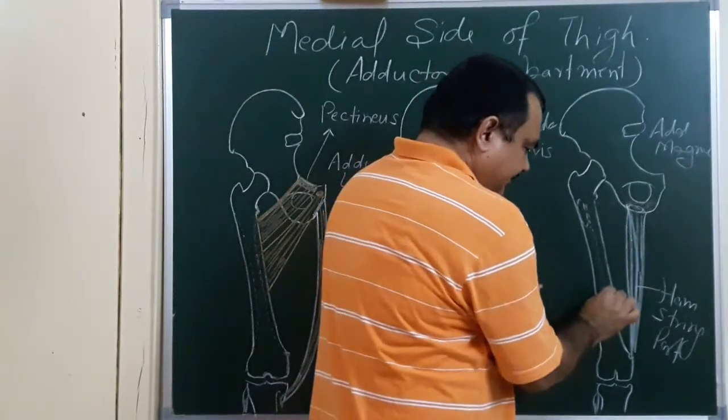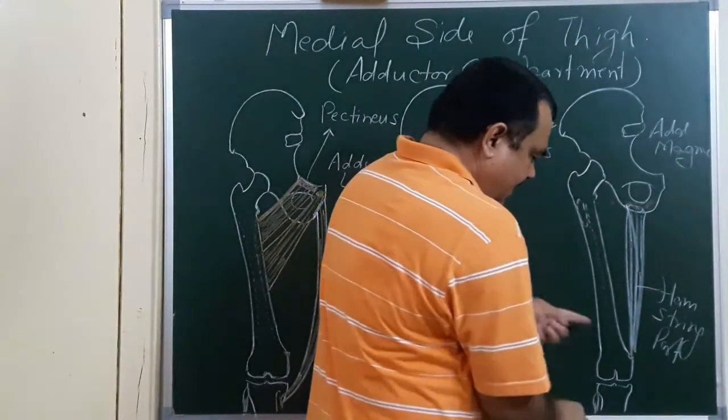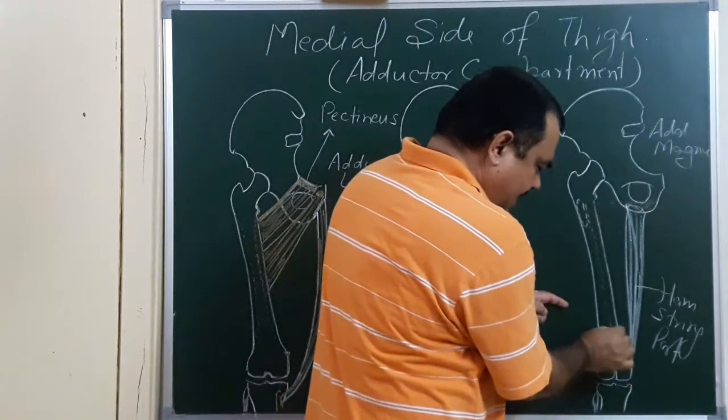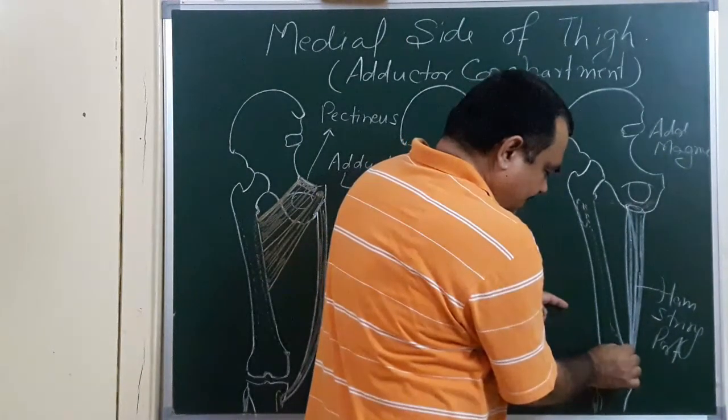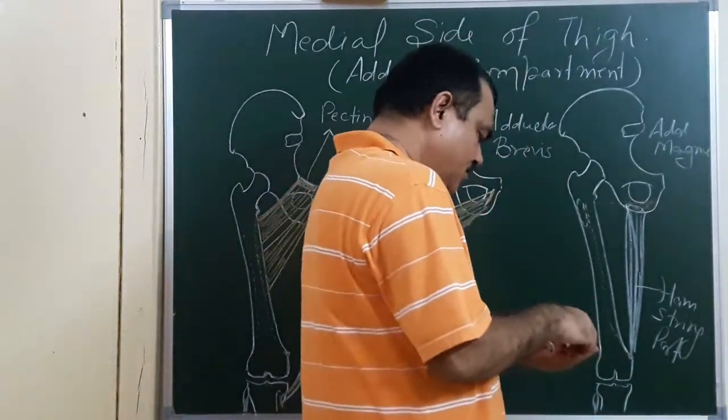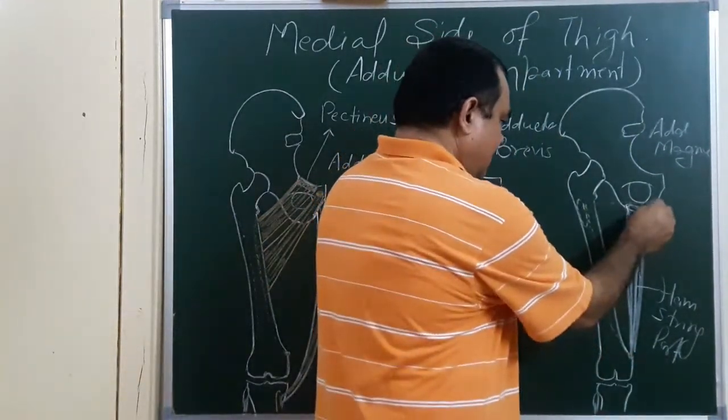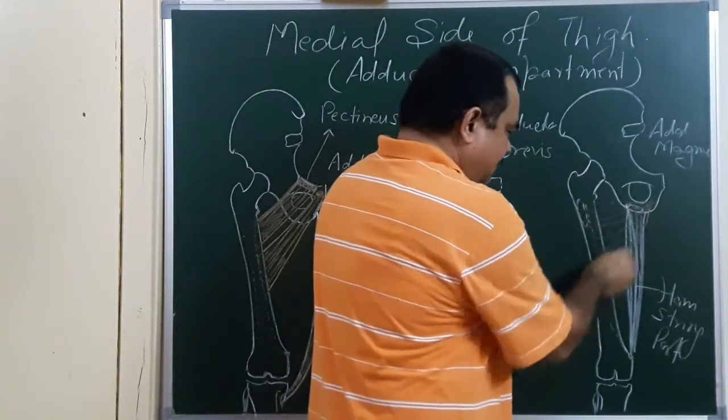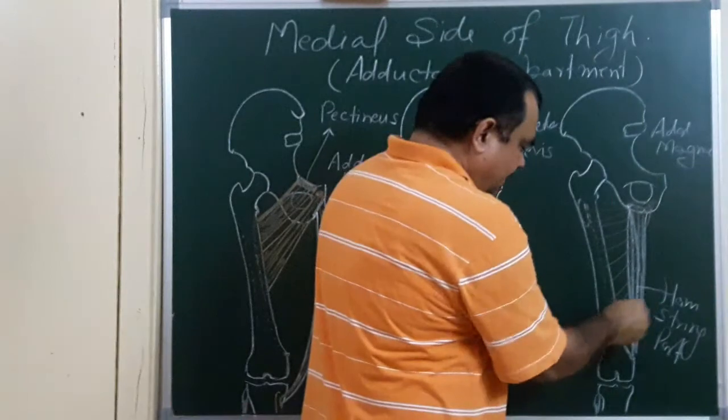Linea aspera and here supracondylar ridge and extend up to the adductor tubercle. So this portion, this portion is adductor portion.